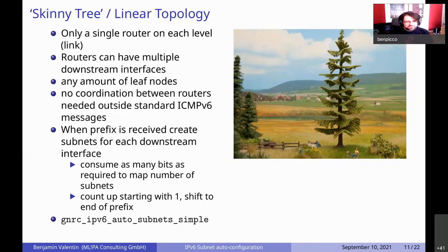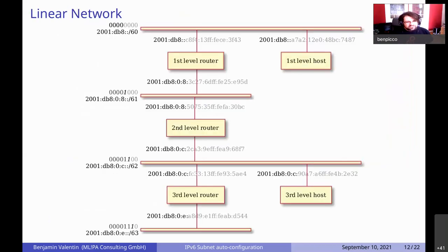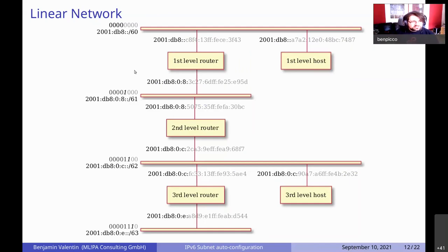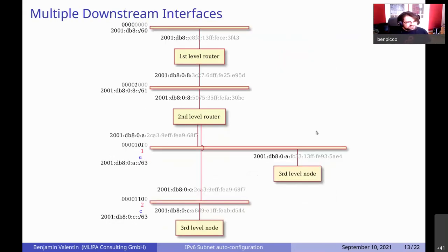Let's start with the simplest case: a linear topology — a skinny tree with no branches. On each level of the tree there is only a single routing node; all other nodes are leaf nodes. The routers can have as many downstream interfaces as they want and don't need any coordination beyond standard ICMPv6 messages. When a prefix is received on the upstream interface, we create downstream prefixes from it. For each downstream network we consume as many bits as needed to encode the number of downstream networks — for two networks we need 2 bits, for four we need 3 bits — then count and shift to the least significant bit position in the subnet. This is already merged in RIOT and can be activated with the gnrc_ipv6_auto_subnets_simple module.